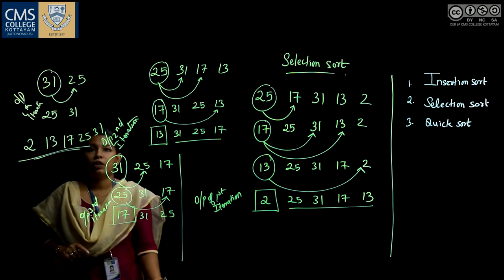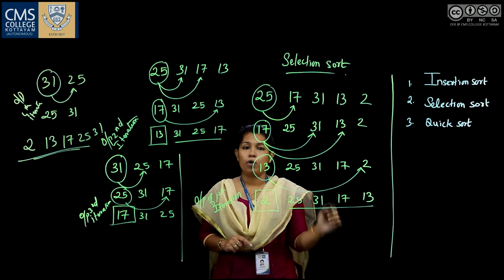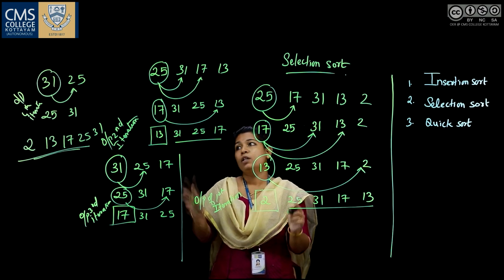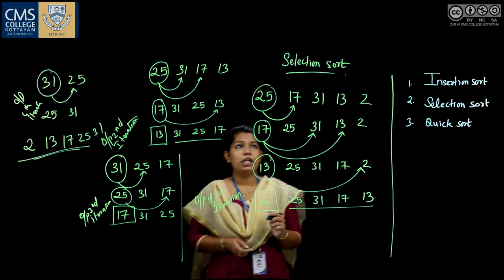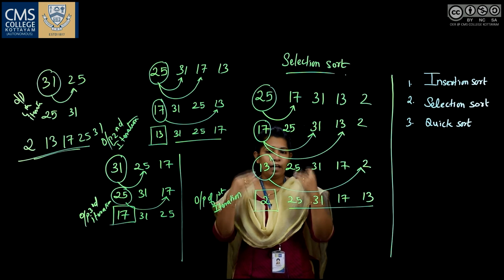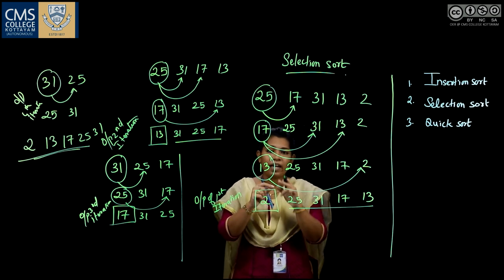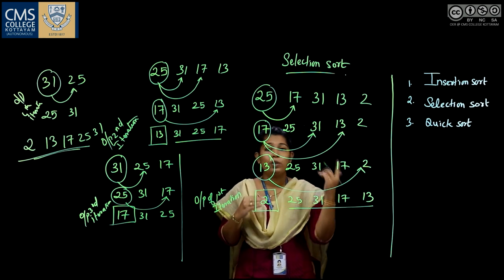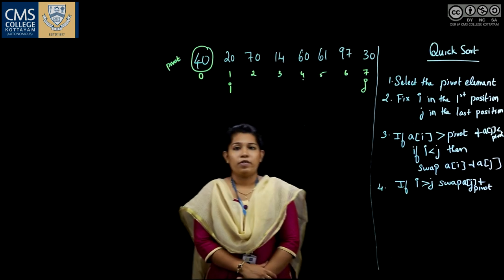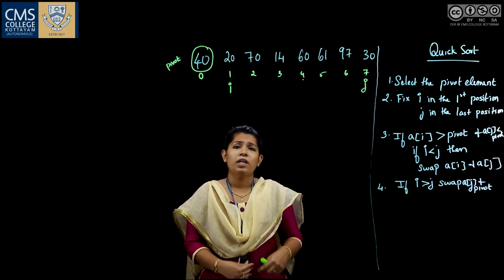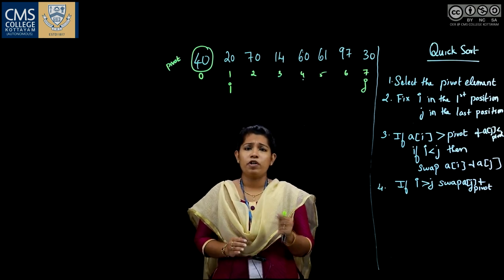Like insertion sort, selection sort also requires n minus 1 iterations to get the sorted list. With n equal to 5, four iterations are required to sort in ascending order. You select the first element, compare with all others, place the smallest at the front, then exclude it and repeat for the remaining elements. The disadvantage of selection sort is it also applies only to small data lists, and selection sort is slower than insertion sort.